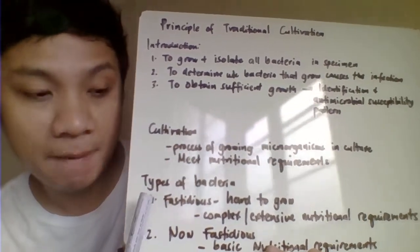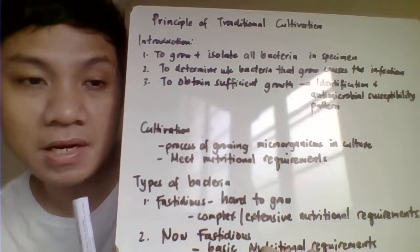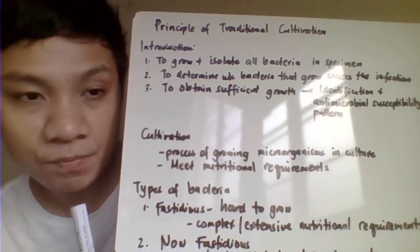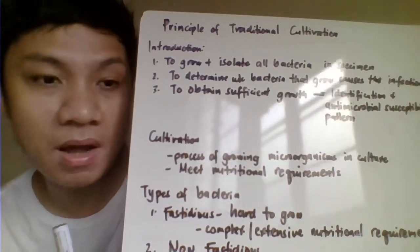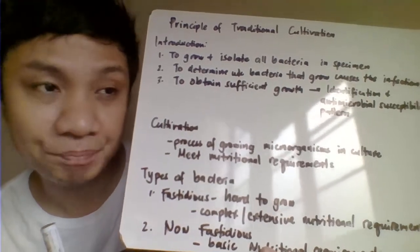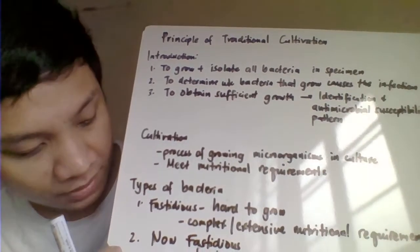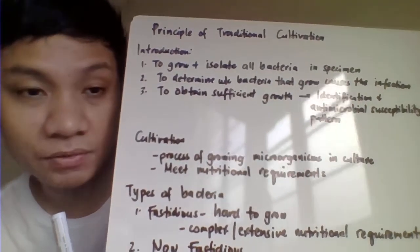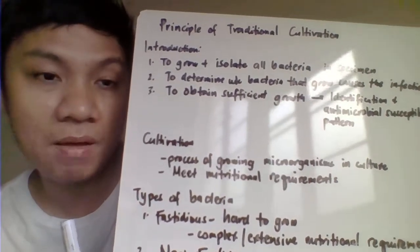The first classification is fastidious organisms — bacteria that are difficult to grow. Aside from basic nutritional requirements, they need additional nutritional requirements. Non-fastidious bacteria, on the other hand, require only the basic nutritional requirements to grow.